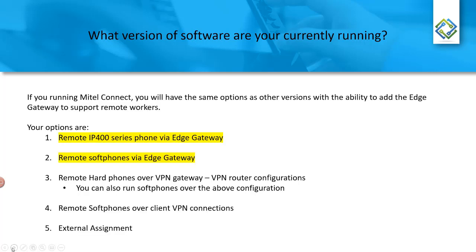If you are running Mitel Connect, you also have the option of deploying a virtual edge gateway. The virtual edge gateway supports remote hard phones — the IP 400 series phones — as well as remote soft phones through the Connect client. In addition to those, the other three options from the previous slide apply: remote hard phones and soft phones over VPN, remote software VPN connections, and external assignment.